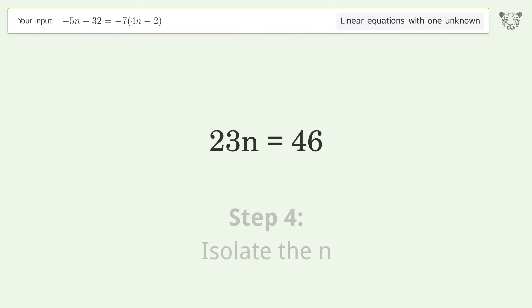Isolate the n by dividing both sides by 23. Simplify the fraction.